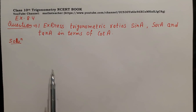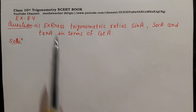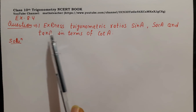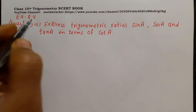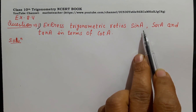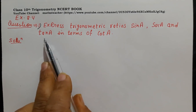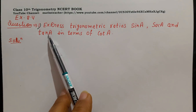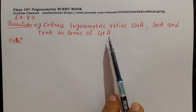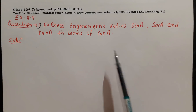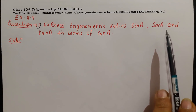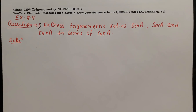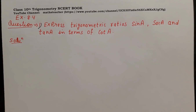Hello viewers, in this video we will solve Exercise 8.4 Question Number 1 from the trigonometry chapter. The question is: express trigonometric ratios sin A, sec A, and tan A in terms of cot A. We know that sin A is perpendicular upon hypotenuse, sec A is hypotenuse upon base, and tan A is perpendicular upon base.